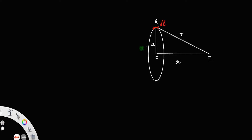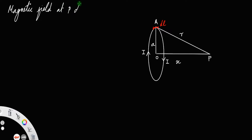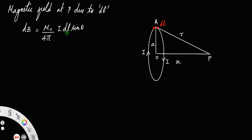Let I be the current flowing through the coil in the clockwise direction. This current element dL produces a magnetic field at the point P — that is, the magnetic field at P due to the current element dL. Since this current element is very small, the magnetic field produced at the point P is also small; let us represent that as dB. We can use the Biot-Savart law: the magnetic field at P will be μ₀/4π × IDL sin θ divided by R².